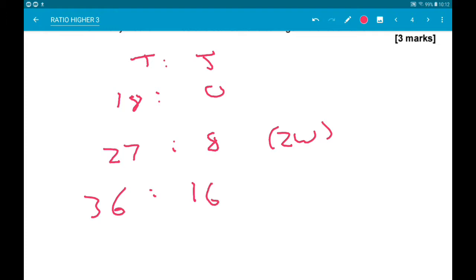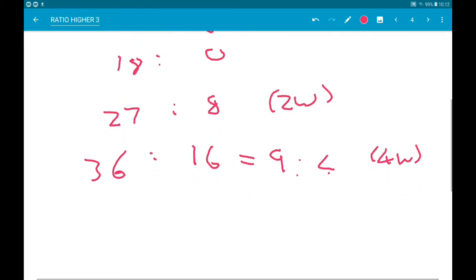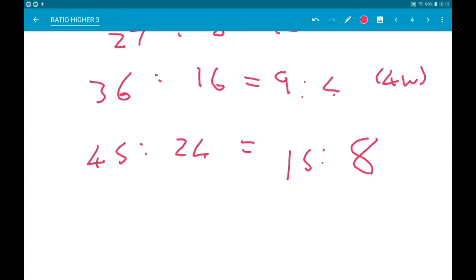Now that does have a common factor of 4. So this is 9 to 4. Not what we want. So that's after 4 weeks. And then they're gonna have 45 to 24. Common factor there of 3. This is 15 to 8. So the answer is 6 weeks.